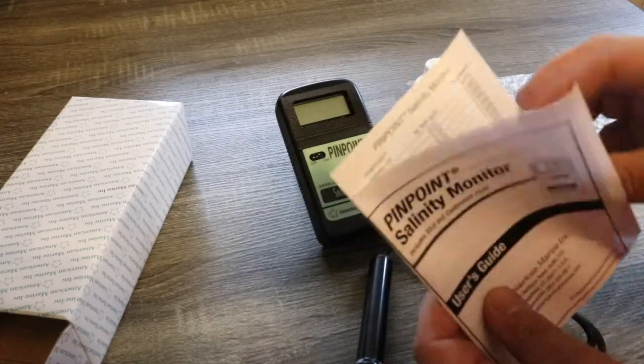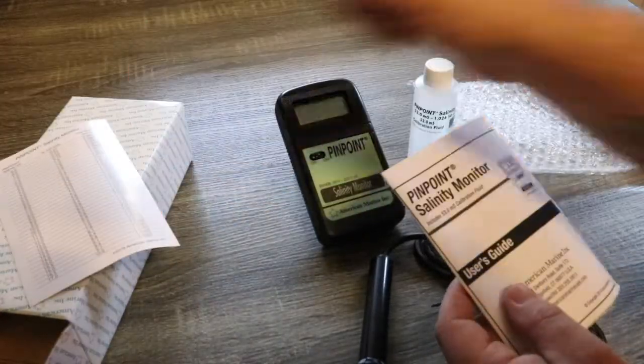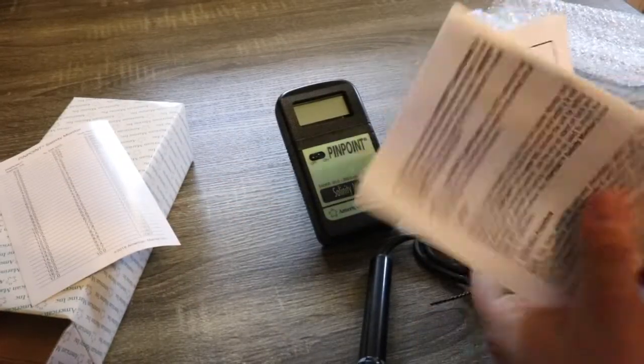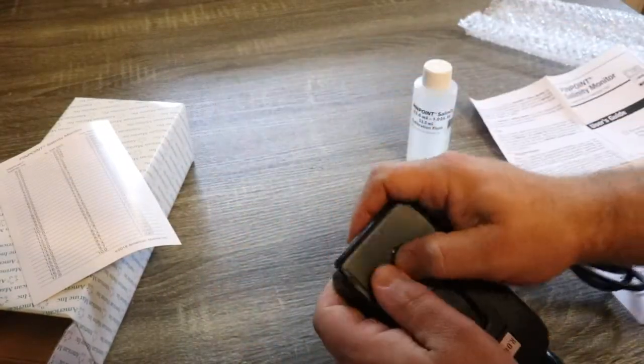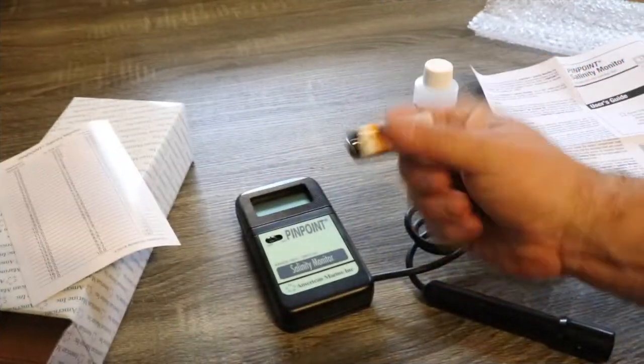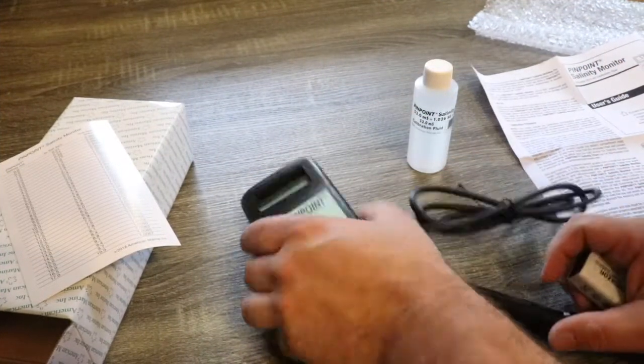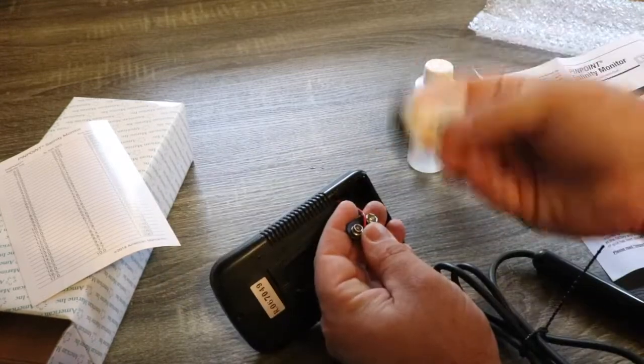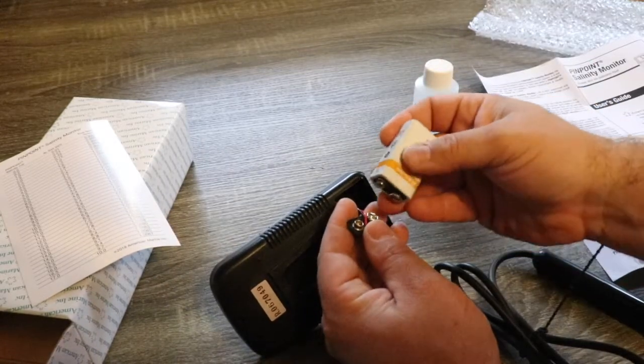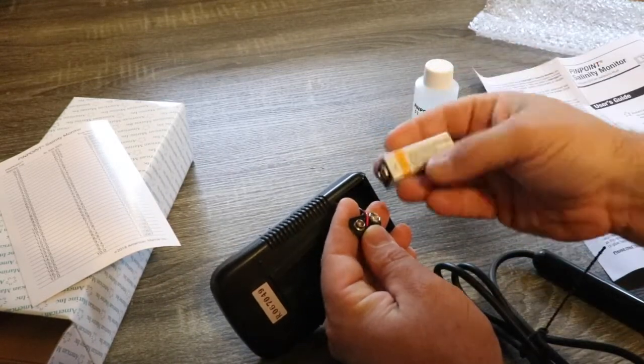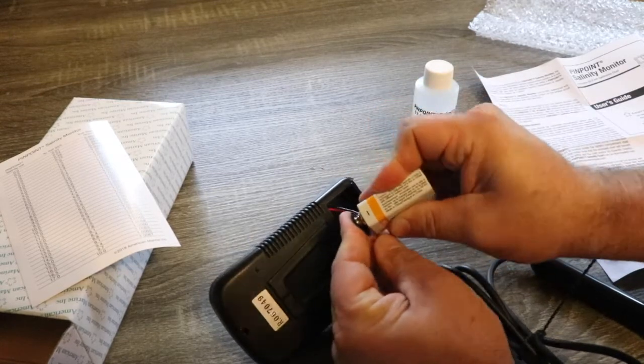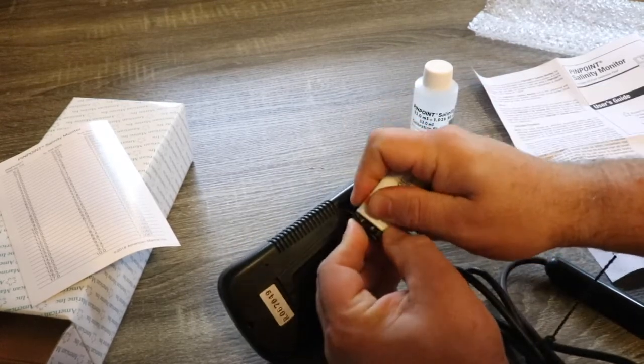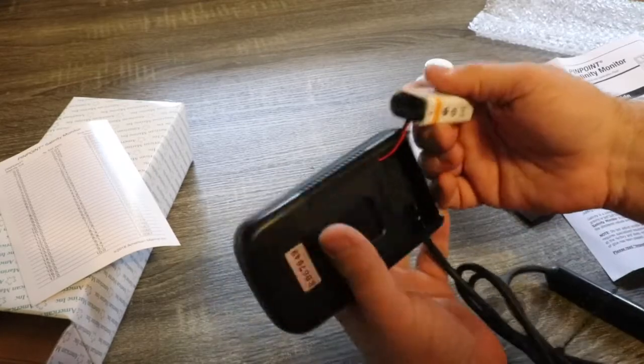Now it's always important to make sure that you read the user's guide prior to operation. See what kind of batteries? Oh, nine volt. All right, so I lucked out, had a nine volt battery kicking around. That's definitely something that you're going to want to pay attention to because nine volt batteries aren't that common. So if you are going to pick one of these up, make sure you pick up some nine volt batteries to go along with it.